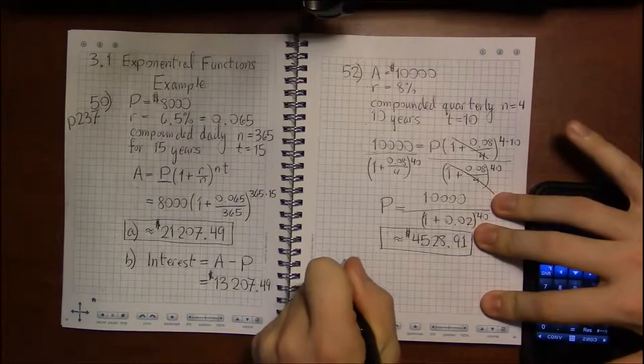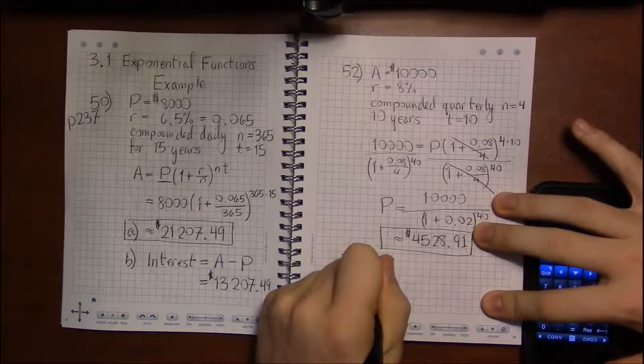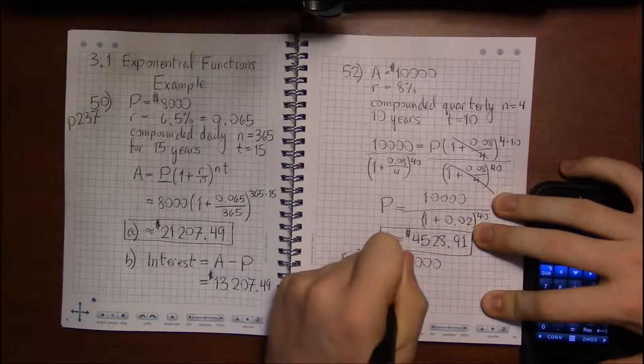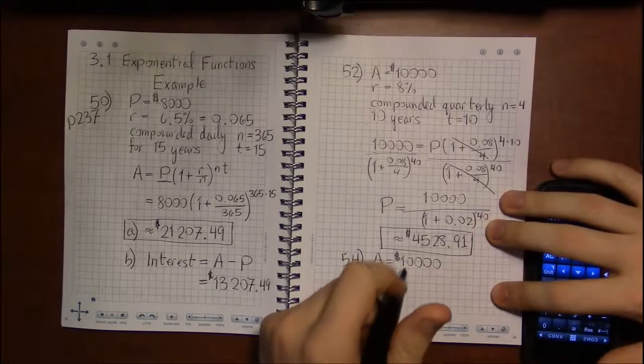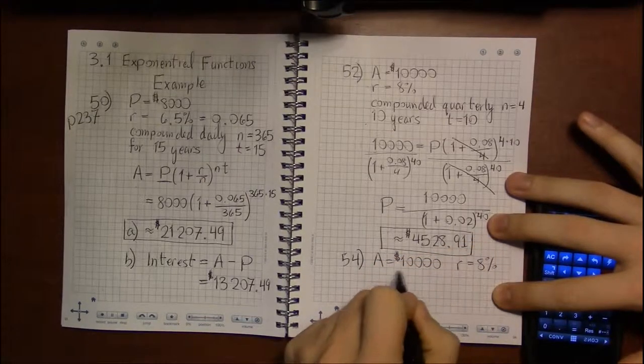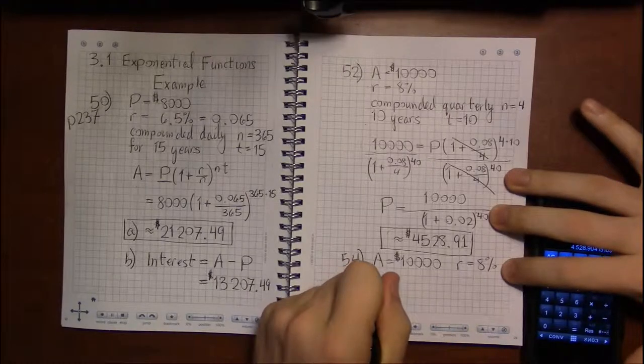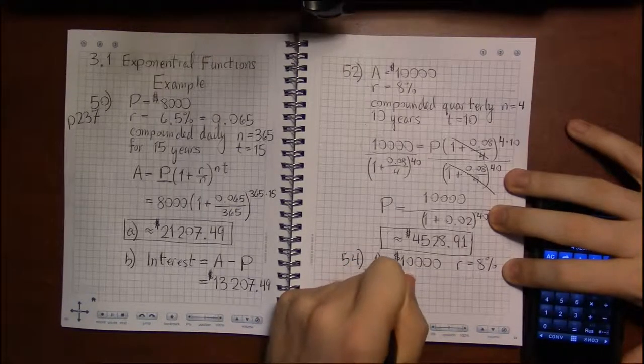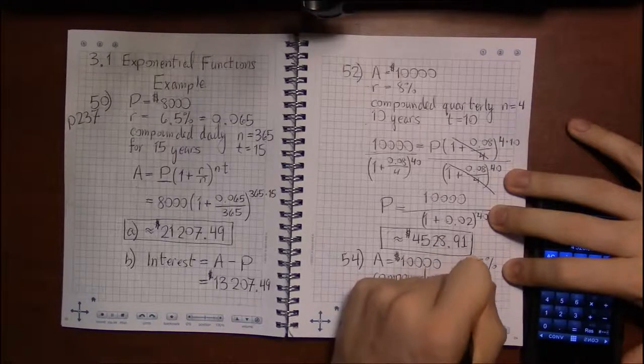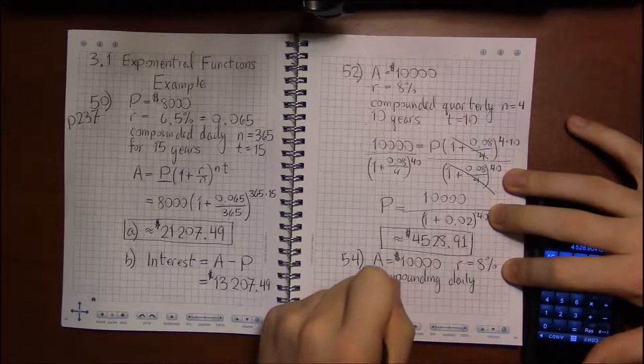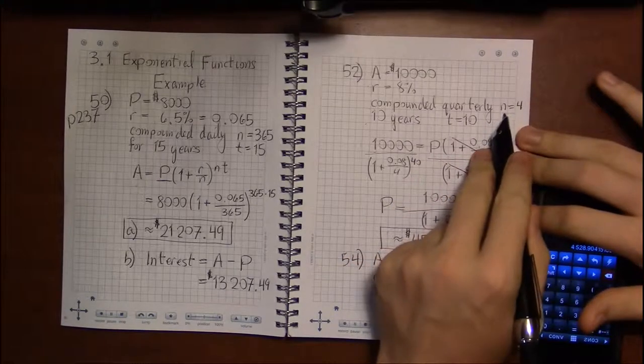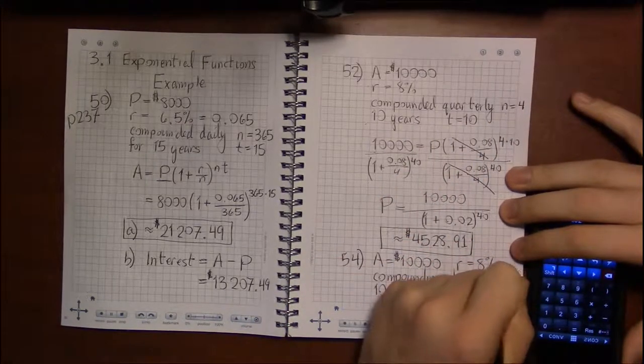And then 54 is kind of a nice twist on this. Everything is the same except how many times we compound per year. In this case, for 54, we're asked to compound daily. So it's still a goal of $10,000, the bank is giving us an 8% interest rate, which is fantastic for a bank. So we're compounding daily, and again, we're leaving this for 10 years. So everything's going to be the same, it's just that N is going to change. N is now going to be 365.